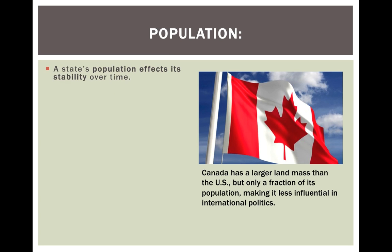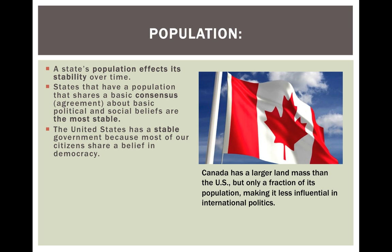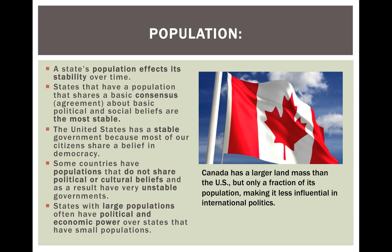Population: the state's population affects its stability over time. States that have a population that shares a basic consensus or agreement about political and social beliefs are the most stable. The United States has a stable government because most of our citizens share belief in democracy. Some countries have populations that do not share political or cultural beliefs and, as a result, have very unstable governments. States with large populations often have political and economic power over states with small populations. Canada, for example, has a larger landmass than the U.S., but only a fraction of its population, making it less influential in international politics.